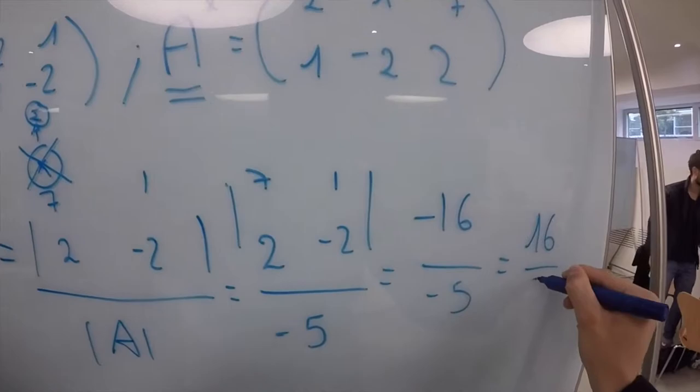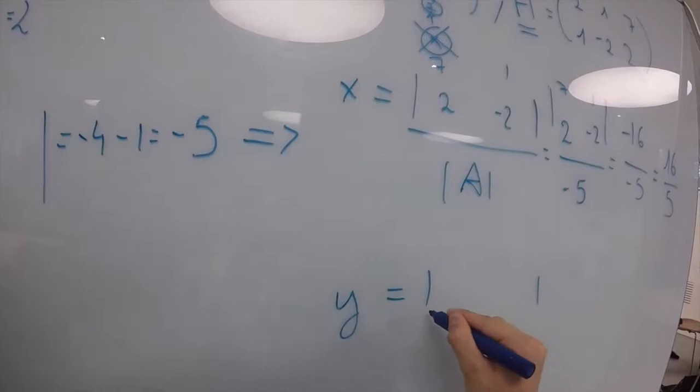For y, our numerator will be our matrix by changing the second column for the amplified matrix. The denominator will be the determinant of A. By calculating it, we get the solution of y, which is 3 over 5. And these are our two solutions: x equals 16 over 5 and y, 3 over 5.